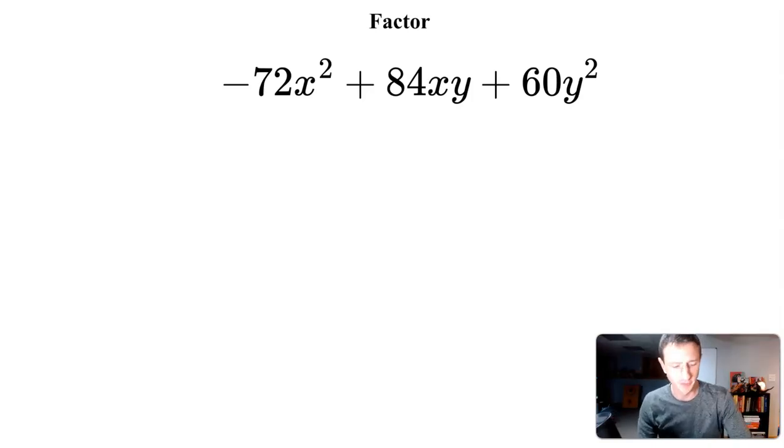Here we're going to factor -72x² + 84xy + 60y². When factoring, we have a lot to keep track of. First, we want to factor out this leading negative. Another thing to keep in mind is the variables: x², x, y, y². Looking at the variables, I know I can't take anything out because I have x² and x but no x in the third term. And I have y² and y but no y in the first term.